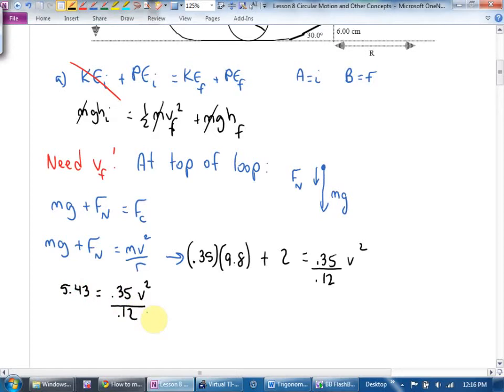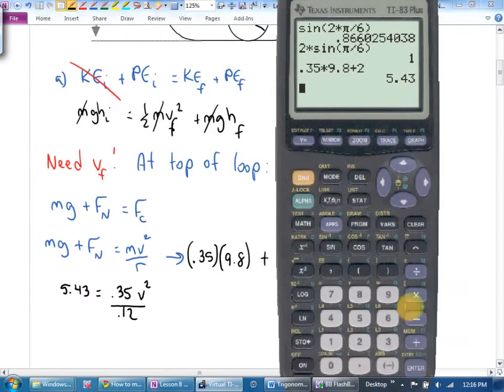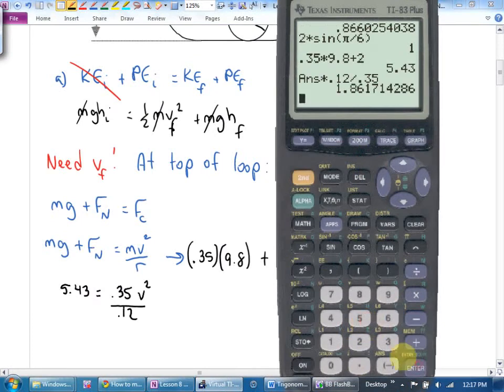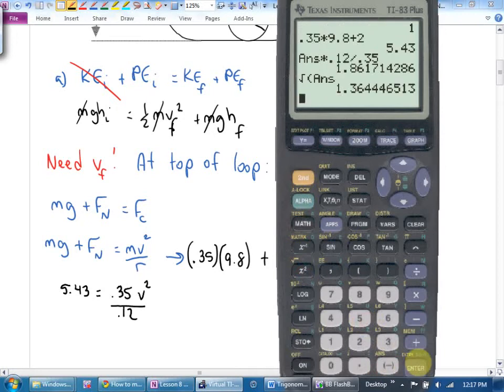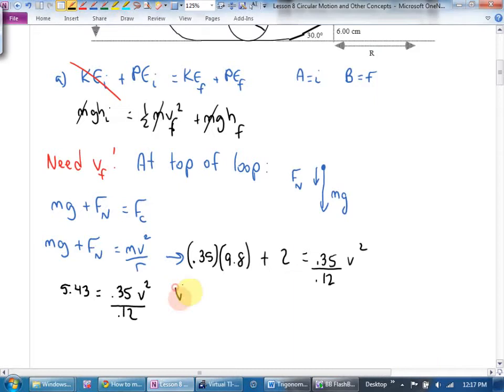5.43 equals 0.35 v squared all over 0.12. How would I get the v by itself? What would I do with the 0.35? Divide. What would I do with 0.12? Times. And how do I get rid of squared? I'm running out of room. So you guys said I would times by 0.12, divide by 0.35, and then square root that. And I get a velocity of 1.364.